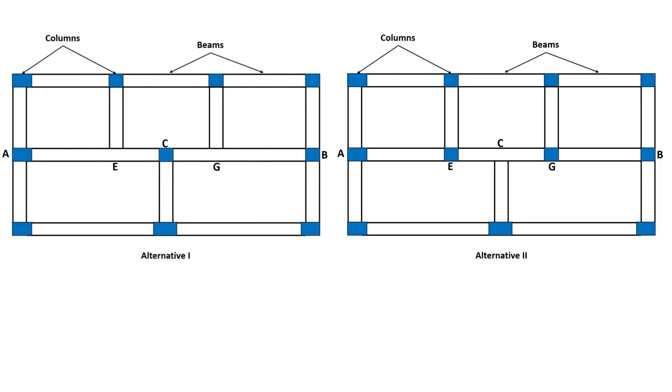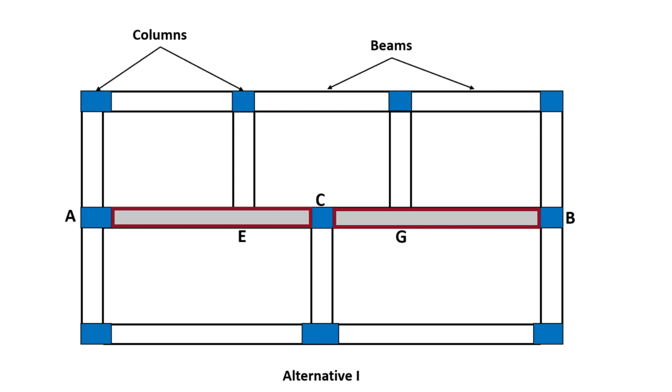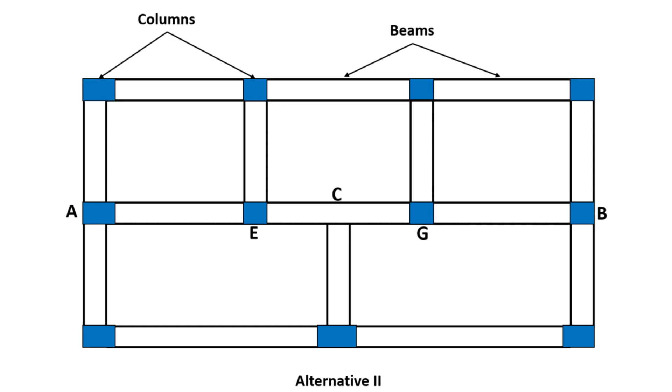Let's consider the structural layout as depicted in this picture which presents two alternatives. To create a two-span continuous beam for AB, a single column can be placed at C. Alternatively, two columns can be installed at E and G to form a three-span continuous beam for AB.